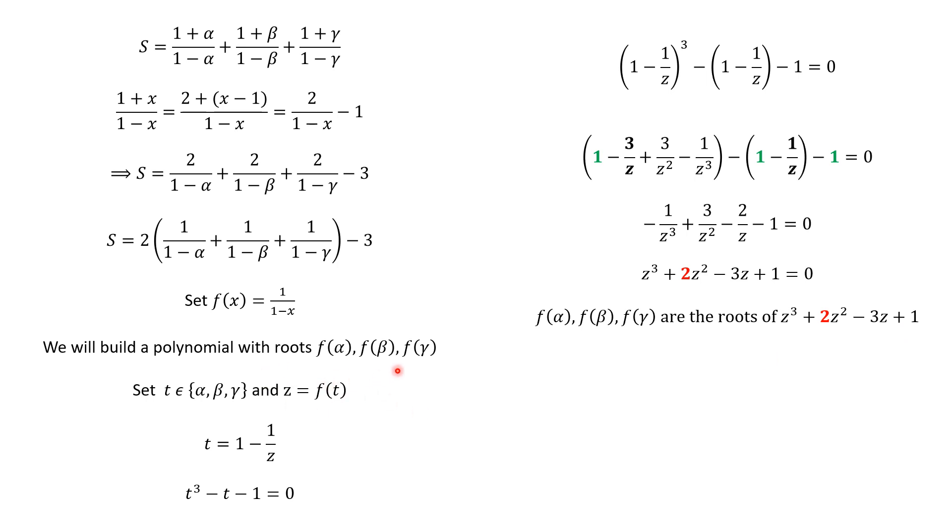So, applying Vieta's formula, F(alpha) plus F(beta) plus F(gamma) equals minus 2. So, we can compute S, because this is F(alpha) plus F(beta) plus F(gamma). So, S equals 2 times minus 2 minus 3. So, S equals minus 7, and we are done.